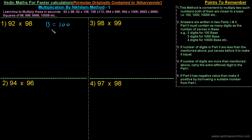The next step is to find how much each number is less than its base, 100. The first number, 92, is 8 less than 100. And 98 is 2 less than 100. Once we have done that, we can directly write down the answer.